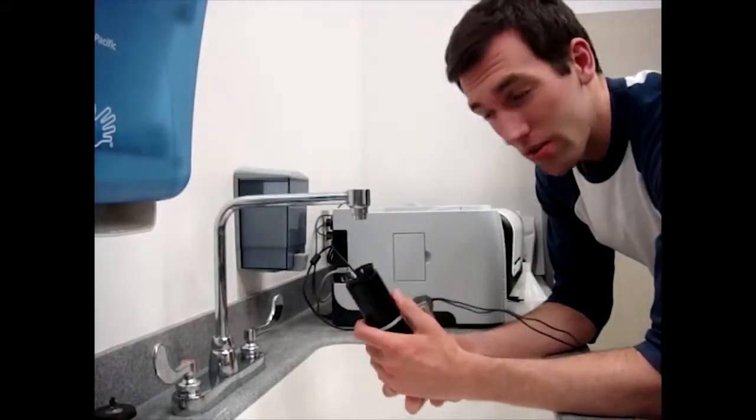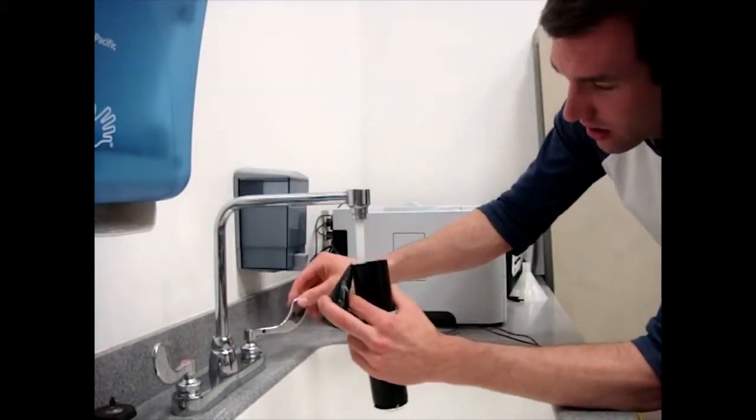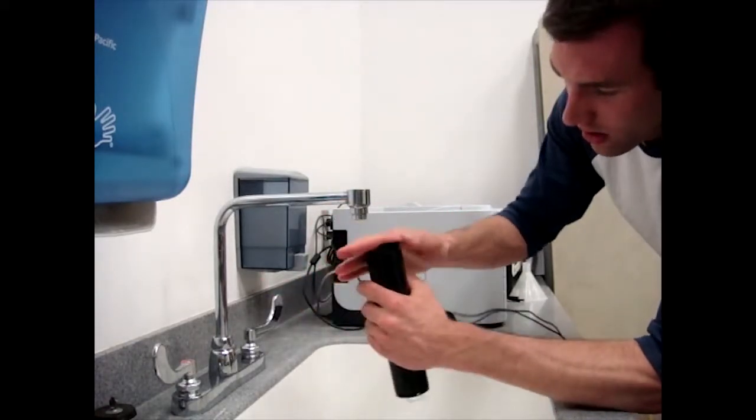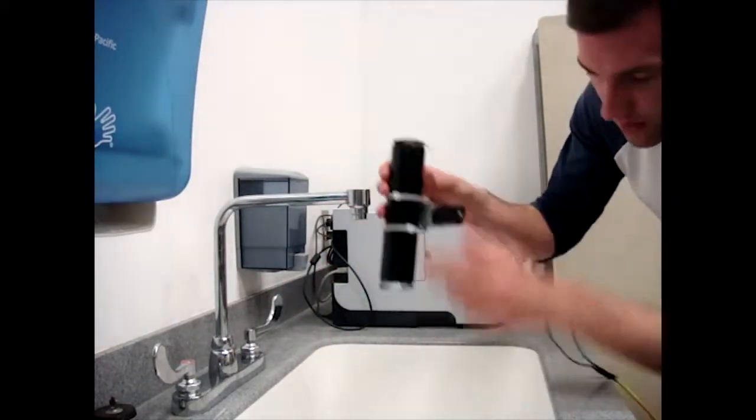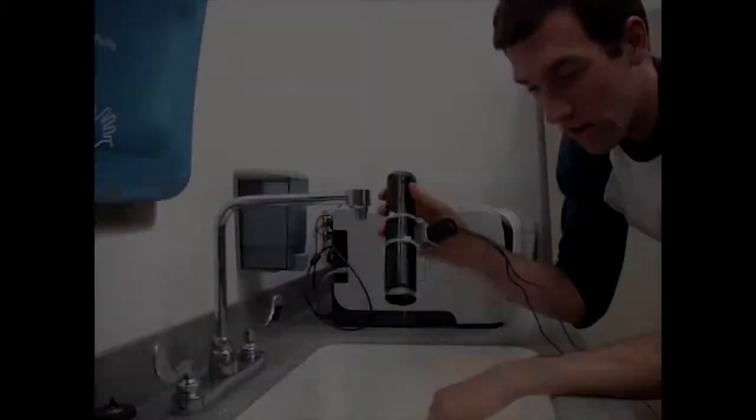A simple test you can do just to make sure that your end seals are sealing is to bring it to the faucet, fill it up with water, and see if you're leaking. I'm leaking on that side, but not that side. So I've got some work to do.